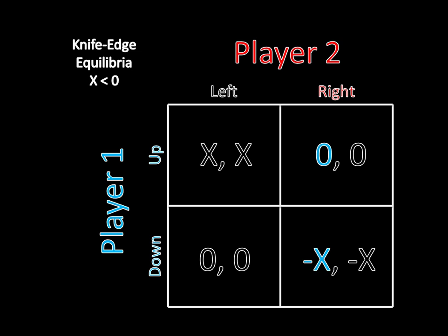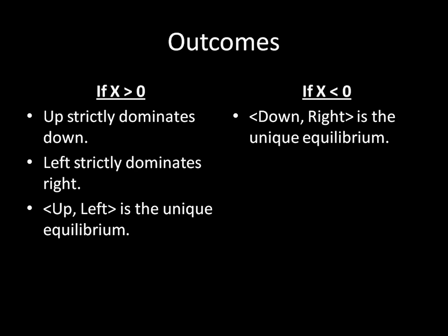And so down is what player 1 will play, and we can do something very similar to show that player 2 has a strictly dominant strategy as well. She's always going to want to play right. And so we have another equilibrium here, where when x is less than 0, down right is going to be the unique equilibrium by dominance. Just like it was the case when x was greater than 0, except in reverse.